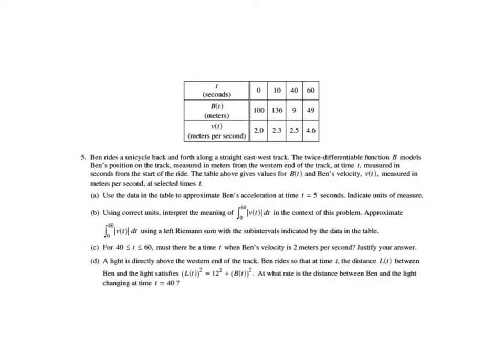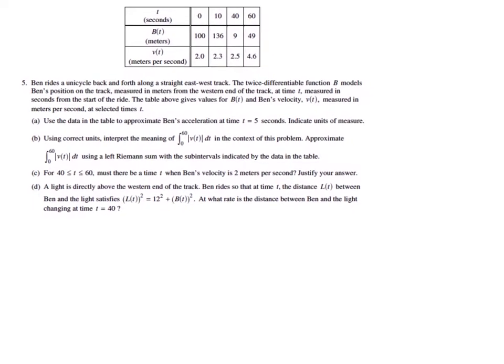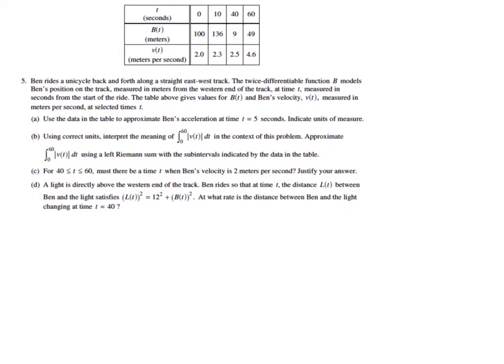Part A says, use the data in the table to approximate Ben's acceleration at time t equals 5 seconds, indicate units of measure. We know that acceleration is the rate of change of velocity. So typically in calculus, to find the acceleration, you take the derivative of the velocity function. Here, though, we just have a table of values, so we can't really take a derivative, and so we just approximate using traditional algebra 1 type slope, using the data that we know.